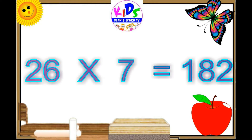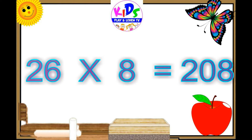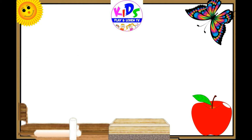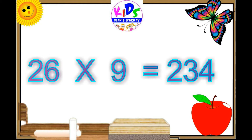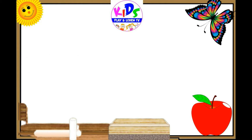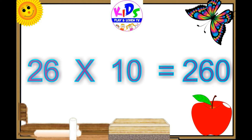26 7s are 182, 26 8s are 208, 26 9s are 234, 26 10s are 260.